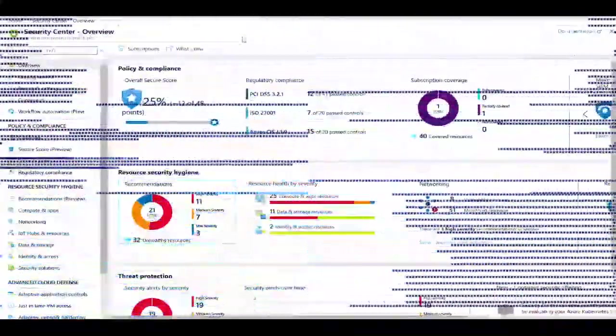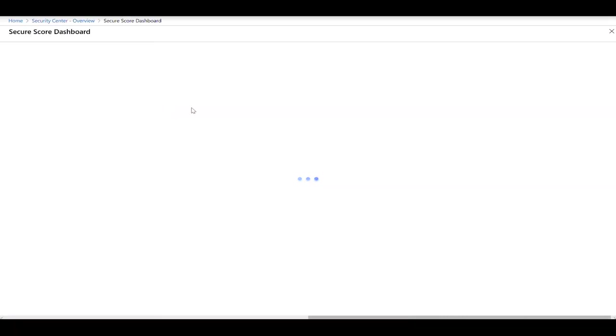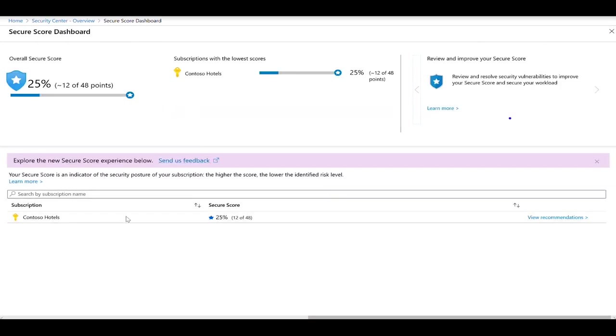In Security Center main dashboard, you now have the new Secure Score model showing a percentage format. This helps you to understand where you are in your journey to address the security recommendations, and your target will be 100%. If you have multiple subscriptions, you can click on the Secure Score itself, and you will see the breakdown per subscription.